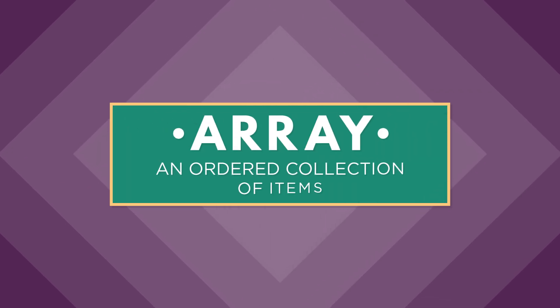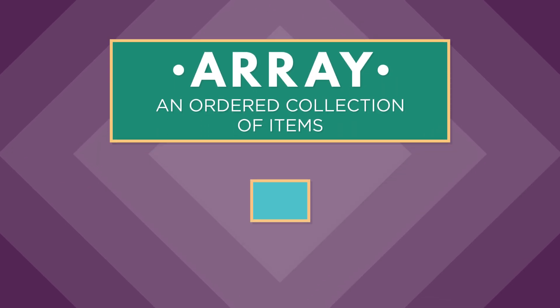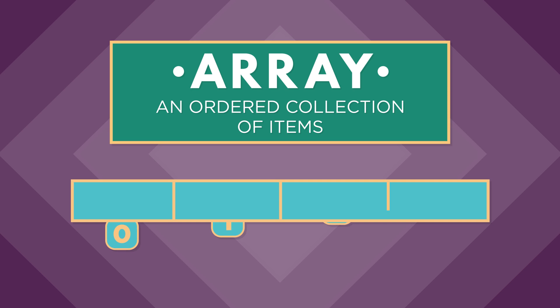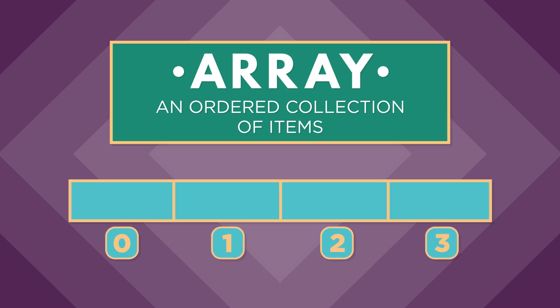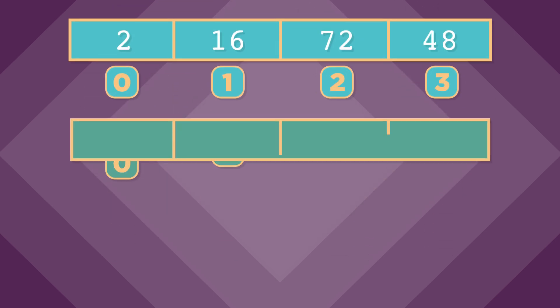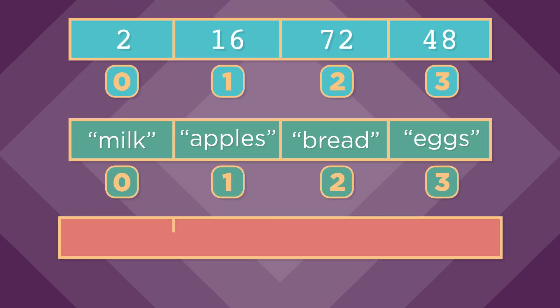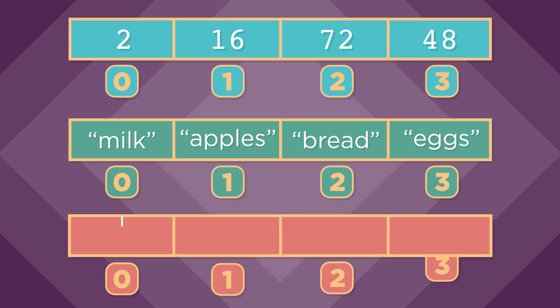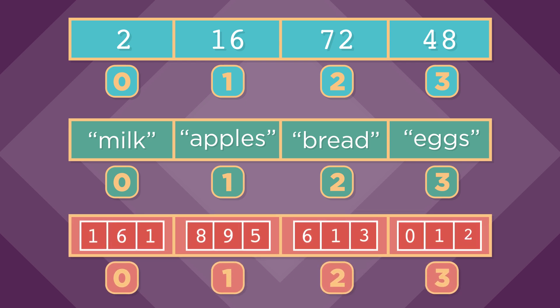An array is an ordered collection of items. You can think of an array as a row of numbered boxes — each box can have one item in it. Arrays can hold all types of data: numbers, strings, and even other arrays.